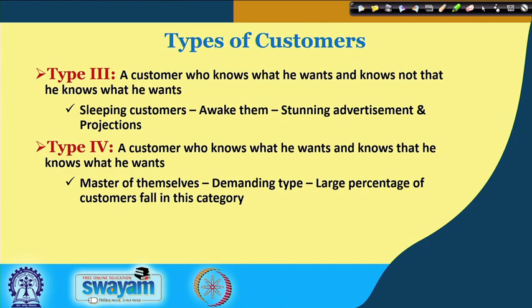Today we operate with multiple channels — Amazon, Flipkart, and many other online retail channels — where customers can compare products, see features, and compare with physical channels. They are more exposed and more knowledgeable. So the majority of customers today fall in the type 4 category. If we know we are dealing with type 4 customers, it is very important to understand, tap, and meet their requirements timely and appropriately.